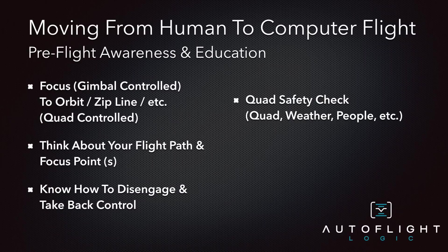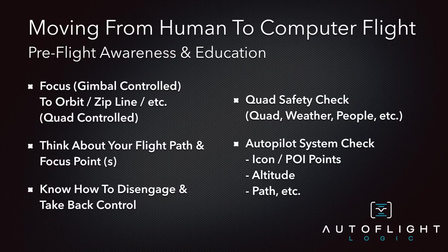As you should every time you fly, check your quad, check the weather, look for people, make sure that you're in F mode, do your calibration, etc. It's even more of an issue in automated mode because you're relinquishing control. In addition to your quadcopter, check and recheck the path, the altitude, the points of interest, where you're focusing, etc. Realize that if you flew earlier and are launching from a different flight location, the old points of interest or focus points will still be there. Just be aware. Now let's fly.